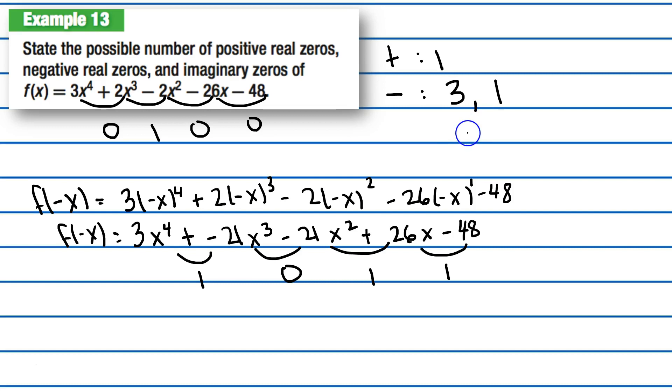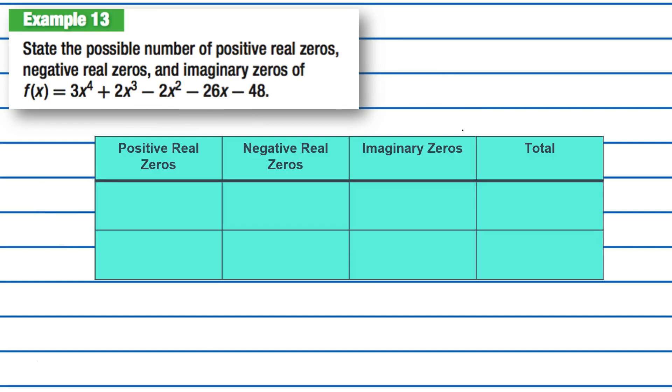So to find the imaginary zeros, I'm going to go to this other slide. We know we have positive zeros, 1. And negative real zeros, we have 3 and 1. Here we're just showing all the possible possibilities. So positive real zeros is always just going to be 1, so I'm going to bring that 1 also here.